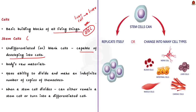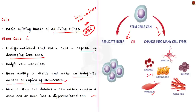Stem cells are the cells from which all other cells with specialized functions are generated. This means stem cells have the ability to divide and make an indefinite number of copies of themselves. When a stem cell divides, it can either remain a stem cell or turn into a differentiated cell like a muscle cell or a red blood cell. Under the right conditions in the body or laboratory, stem cells divide to form more cells called daughter cells.